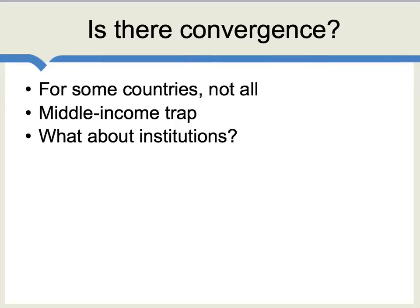Because of catch-up growth, the Solow model generally predicts that there will be a convergence of living standards around the world, because the poorer countries are playing catch-up to the richer countries. If the poorer countries are growing at a faster rate, then at some point in time they will indeed catch up. If you look at all of the growth in developing economies over the last 10 to 20 years, the Solow model is actually seen as explaining a pretty good piece of this growth.